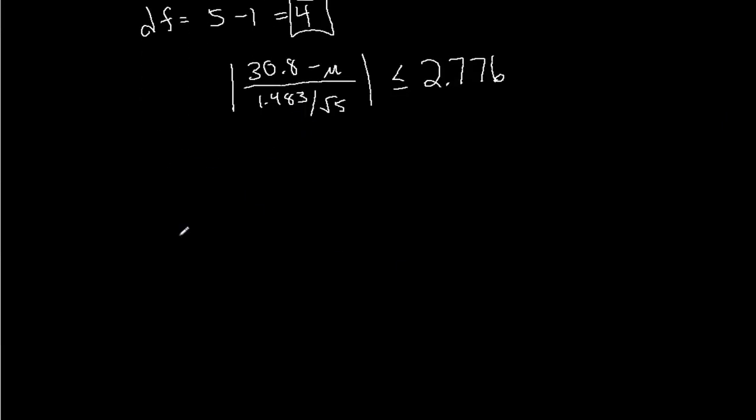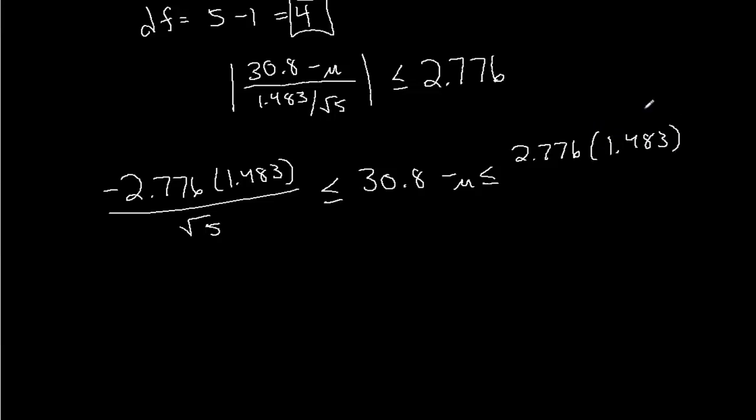I'll go ahead and multiply by this denominator and split it up into two inequalities. So we'll have negative 2.776 times 1.483 divided by the square root of five, that is less than or equal to 30.8 minus mu, which is less than or equal to 2.776 times 1.483 divided by the square root of five. What we're going to do is we're going to solve for mu here.